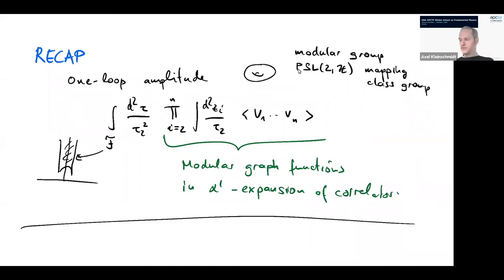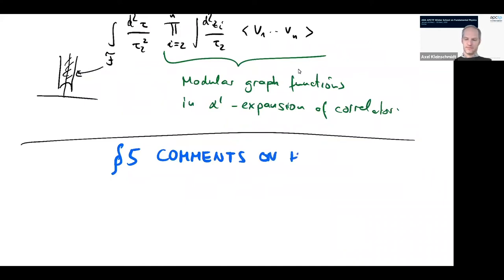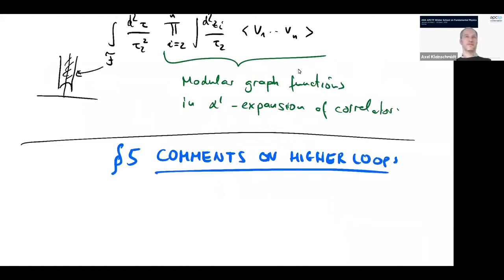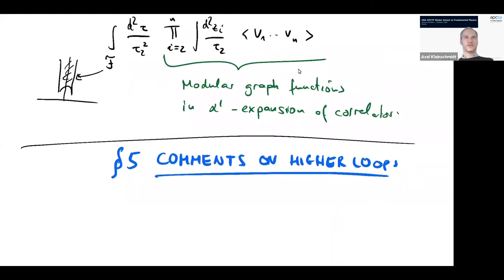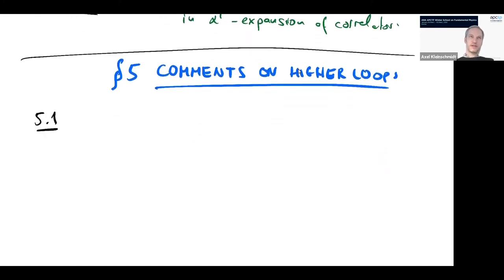Now I will say a few things about what is known at higher loops — Section 5: comments on higher loops. The basic structure is of course unchanged, as we also discussed in the very beginning. There will be a moduli space over the Riemann surfaces, and eventually there will be issues related to the non-splitness of moduli space, and there will be the CFT configuration space integral as well.